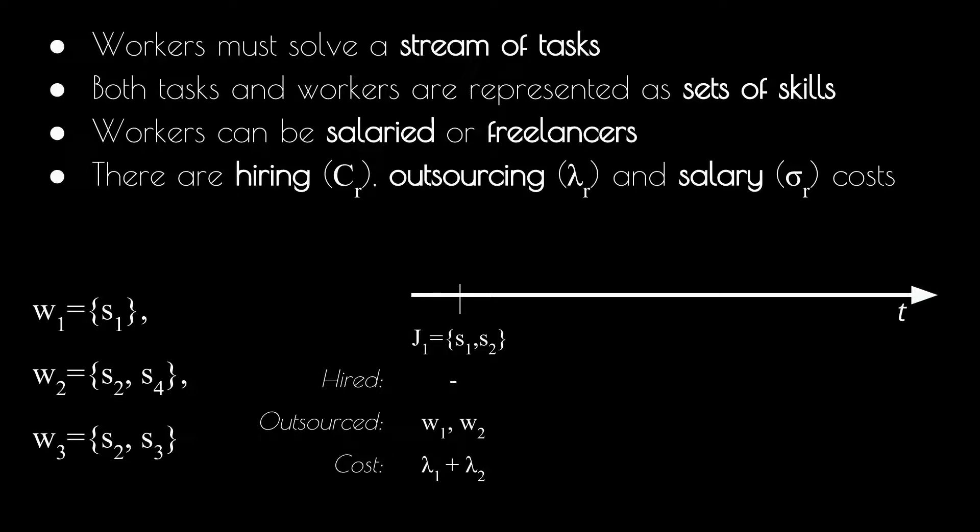Now, a second task arrives, which requires other skills. But now, we decide that we will hire worker 1, while outsource the rest of the required skills to worker 3. The cost we will pay includes hiring, salary, and outsourcing costs.